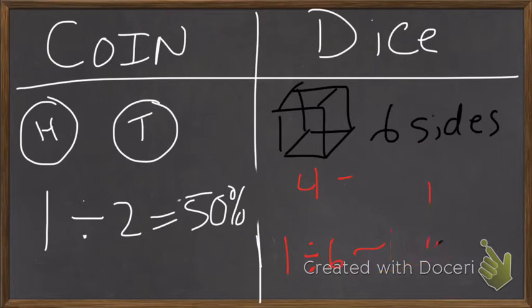If we want to know the probability of rolling an even number, prob of even number. Since the die has numbers 2, 4, and 6, that would be 3 over 6. And 3 divided by 6 equals 50%.